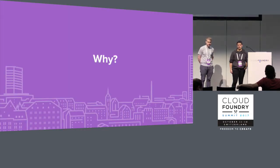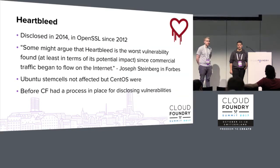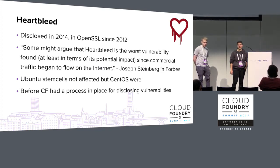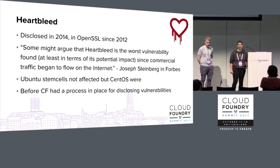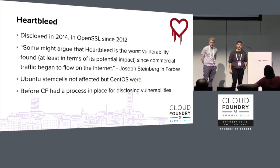So why did we decide to invest in building Davos? Heartbleed, which was disclosed in 2014 — this was actually before I joined Pivotal — was a vulnerability in OpenSSL that affected most commercial traffic on the internet. Some of our stem cells were affected but not all of them were. It was also kind of the first major public vulnerability that happened after Cloud Foundry came about but before the Foundation or even Pivotal really had a process in place for disclosing vulnerabilities.